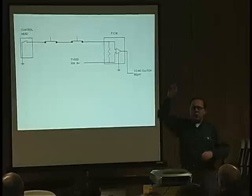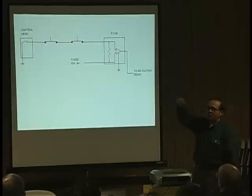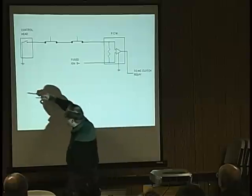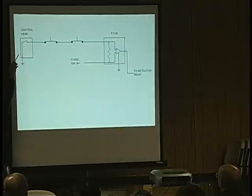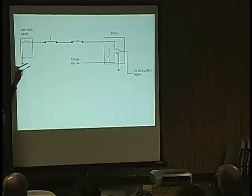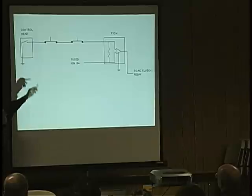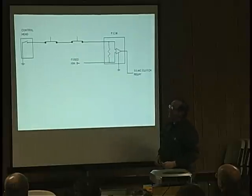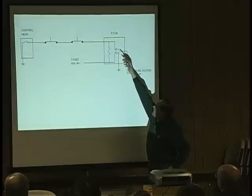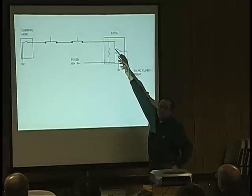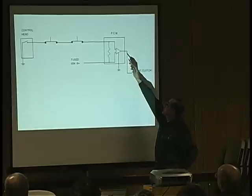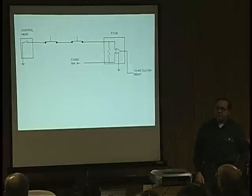When the comparator sees 12 volts and 12 volts, it doesn't do a thing. It just sits there. So what happens when you call for AC? When you call for AC, the control head grounds that wire. Now because the wire is grounded and the dropping resistor is dropping that down, the voltage on that lead will drop to zero. When the comparator sees zero volts on this lock lead and 12 volts on this lead, it turns around and sends a signal out to the clutch relay to turn the clutch on. Does everybody see how that works?